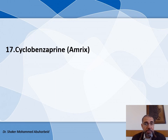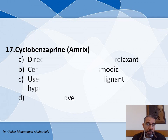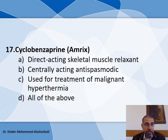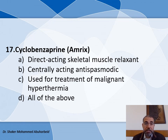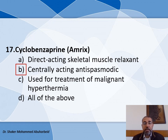Question number seventeen: Cyclobenzaprine is — A) A direct-acting skeletal muscle relaxant, B) A centrally-acting antispasmodic, C) Useful for treatment of malignant hyperthermia, or D) All of the above. The correct answer is B — it is a centrally-acting antispasmodic.